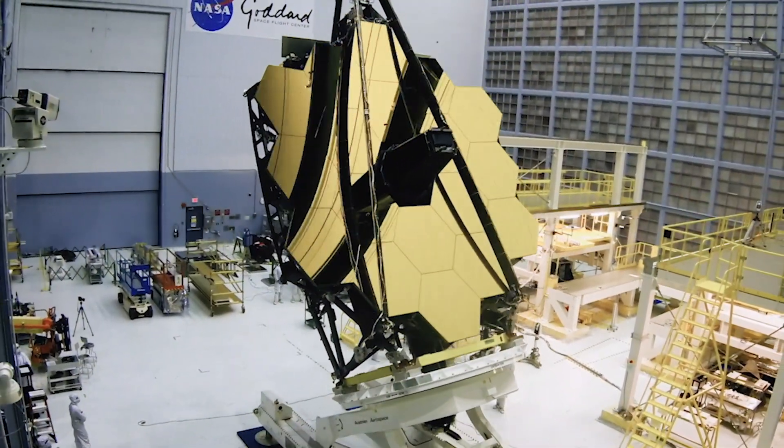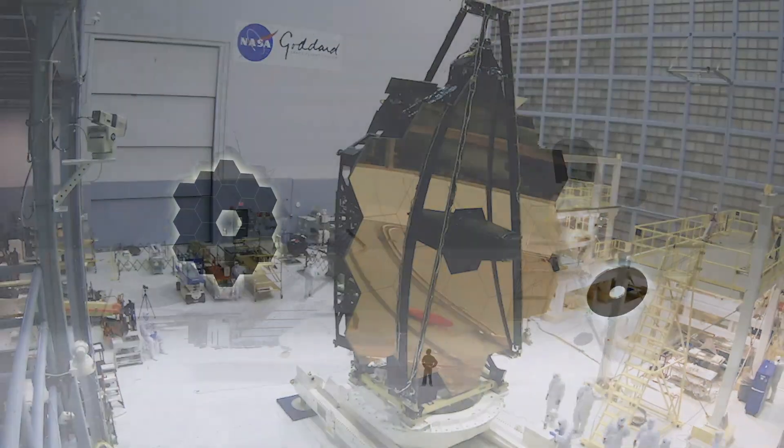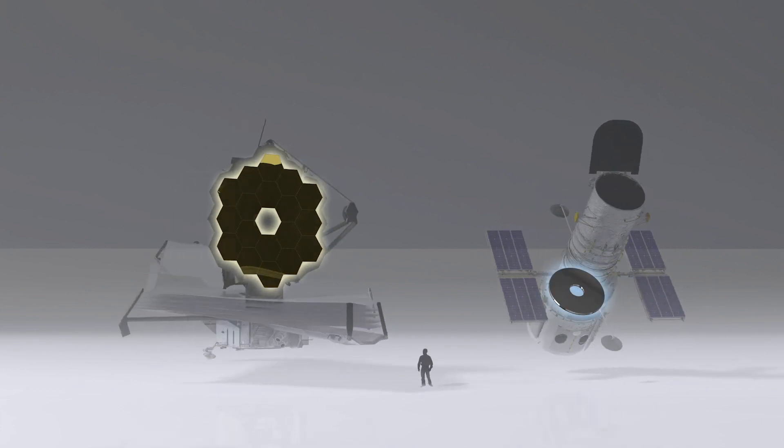Equipped with the largest primary mirror ever to be flown in space at six and a half meters, it's more than six times the size of the Hubble Space Telescope primary mirror.